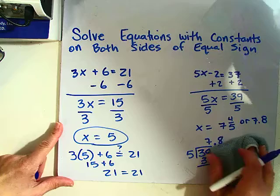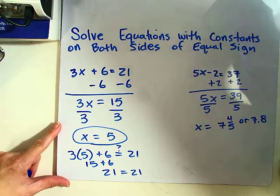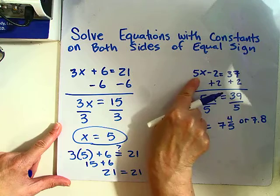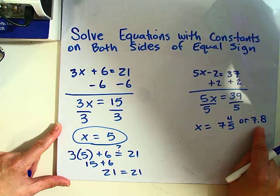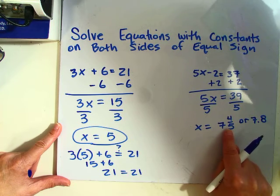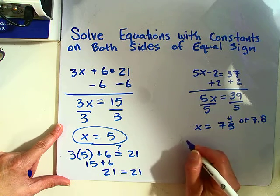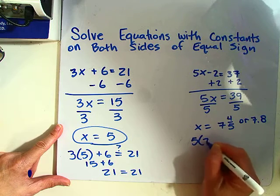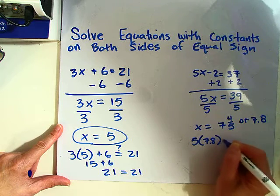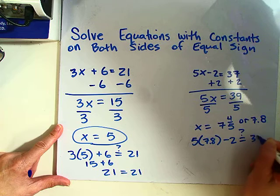Let's go ahead and double check our work by plugging in our answer into this equation. I'm going to use the decimal as my solution, but you could plug in the fraction as well if you want. So 5 times 7.8 minus 2, does that equal 37?